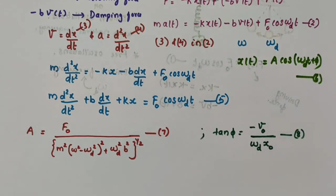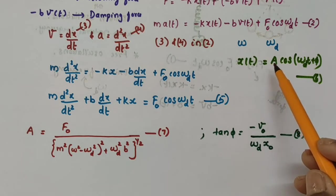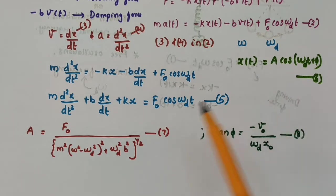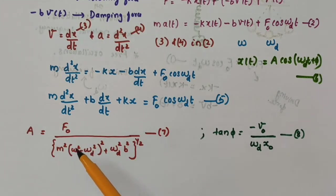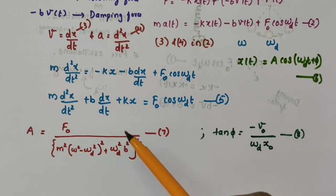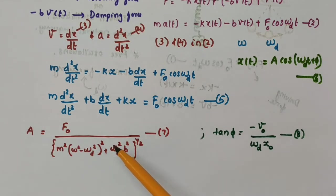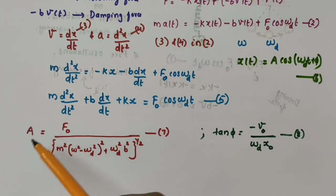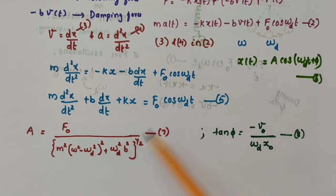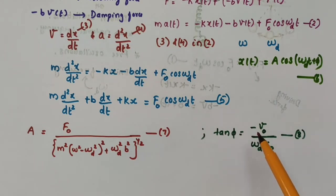Here, t is the time measured from the moment when we apply the periodic force, A is the amplitude of oscillation, and phi is the phase constant. The amplitude A is given by: A = f0 / [m²(omega² − omega_d²)² + omega_d²·b²]^(1/2), taken as equation number 7. The amplitude is a function of the driving frequency omega_d and the natural frequency omega.